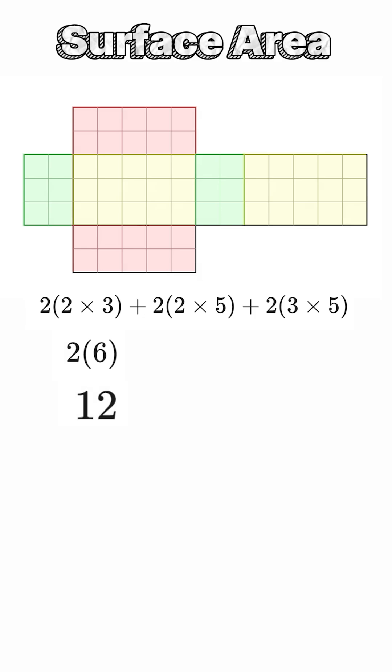A 2 by 5 rectangle has an area of 10 square units. With two of these faces, the total area is 20 square units.